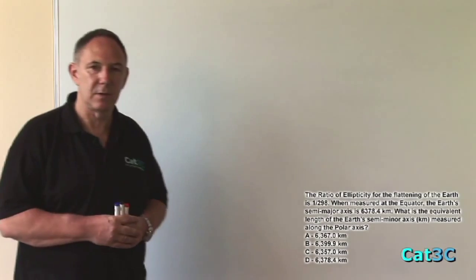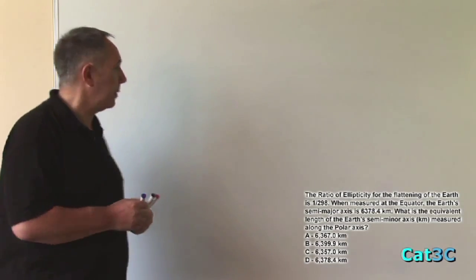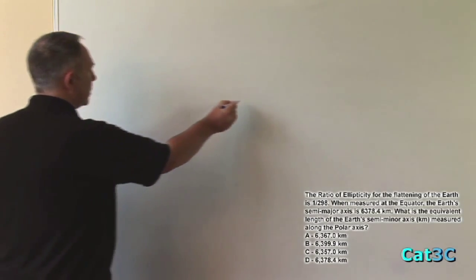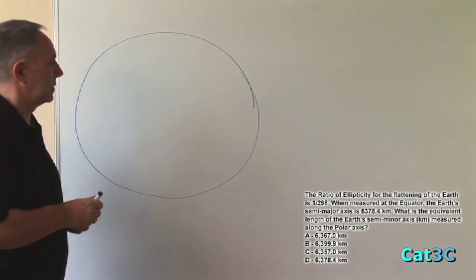The first thing we have to do is to understand the ratio of ellipticity. Contrary to popular belief, the Earth is not a perfect sphere. It is in fact an elliptical shape, like so, known as an oblate spheroid.